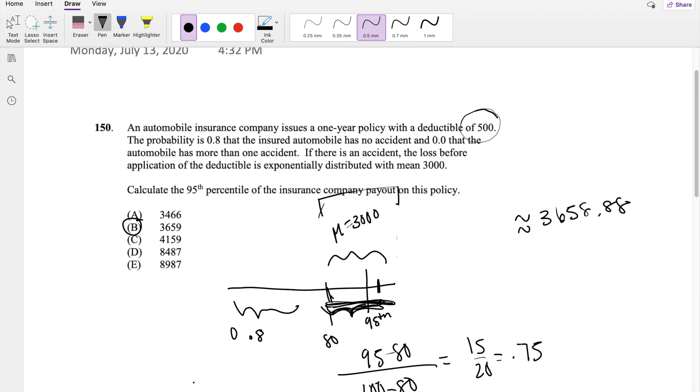And that's because when we did the CDF, that's not taking into account the deductible. So the actual payout is anything over 500. So we have to subtract 500.